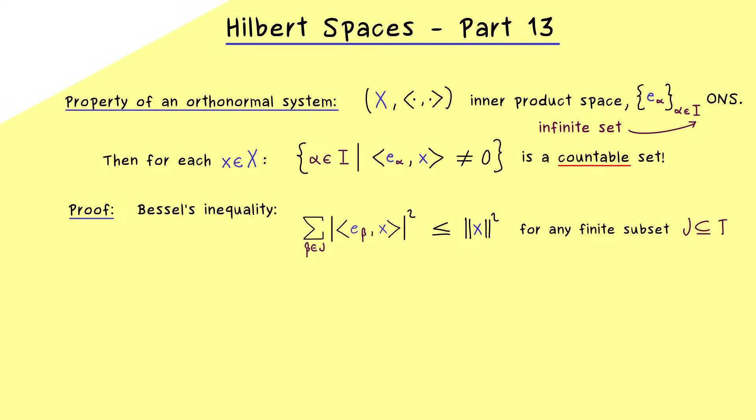Which also implies, if we include more and more terms in this sum, the terms we include have to get smaller and smaller. So for example, consider the set of indices where the absolute value of this inner product here is greater or equal than a given 1 over N. This one definitely has to be a finite set for every given natural number N. Simply because if it was an infinite set, you could take as many elements as you want from this set and eventually violate Bessel's inequality.